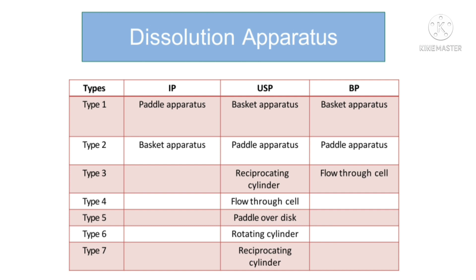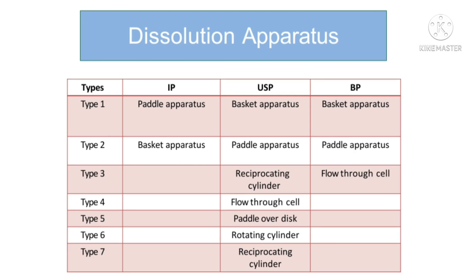The acceptance criteria for dissolution are as follows. Stage 1: 6 samples tested — each unit is not less than Q plus 5%. Stage 2: 6 additional samples tested — average of 12 units is equal to or greater than Q, and not more than 2 units are less than Q minus 15%. Stage 3: no unit is less than Q minus 15%, and no unit is less than Q minus 25%.